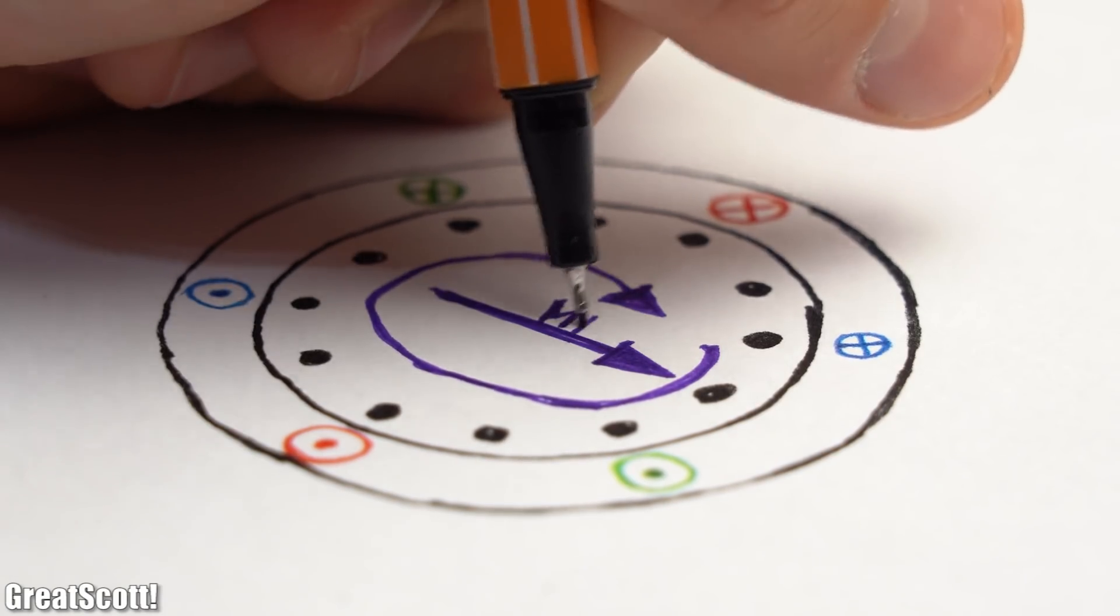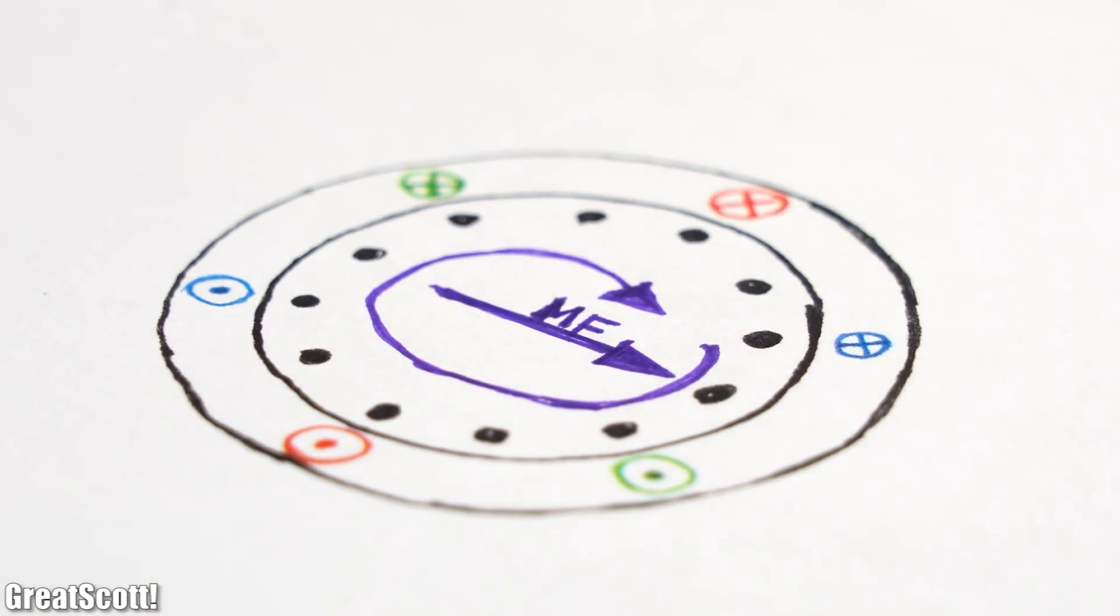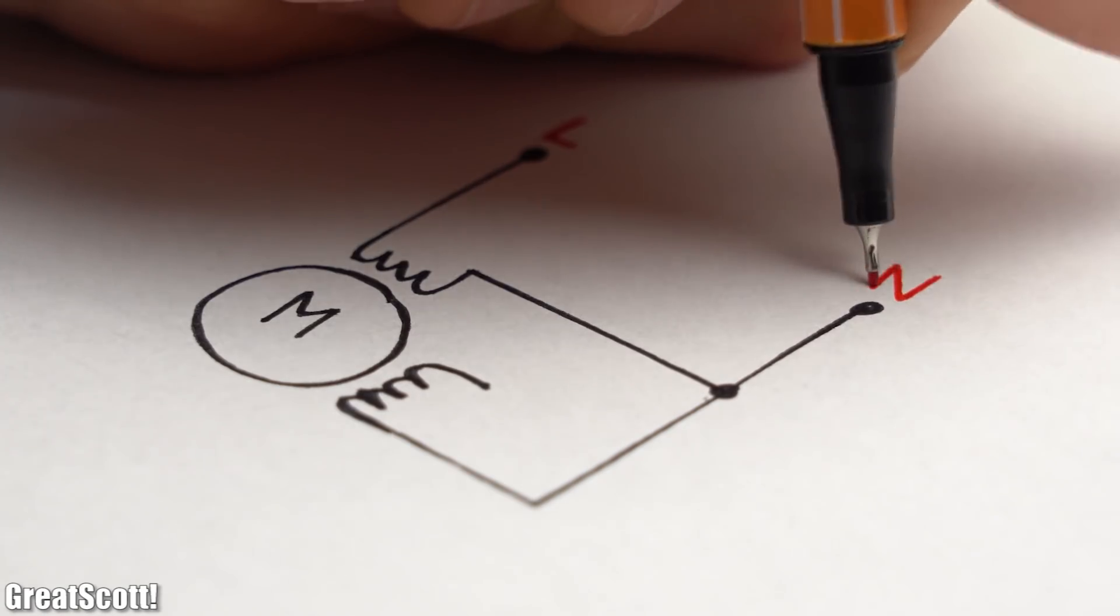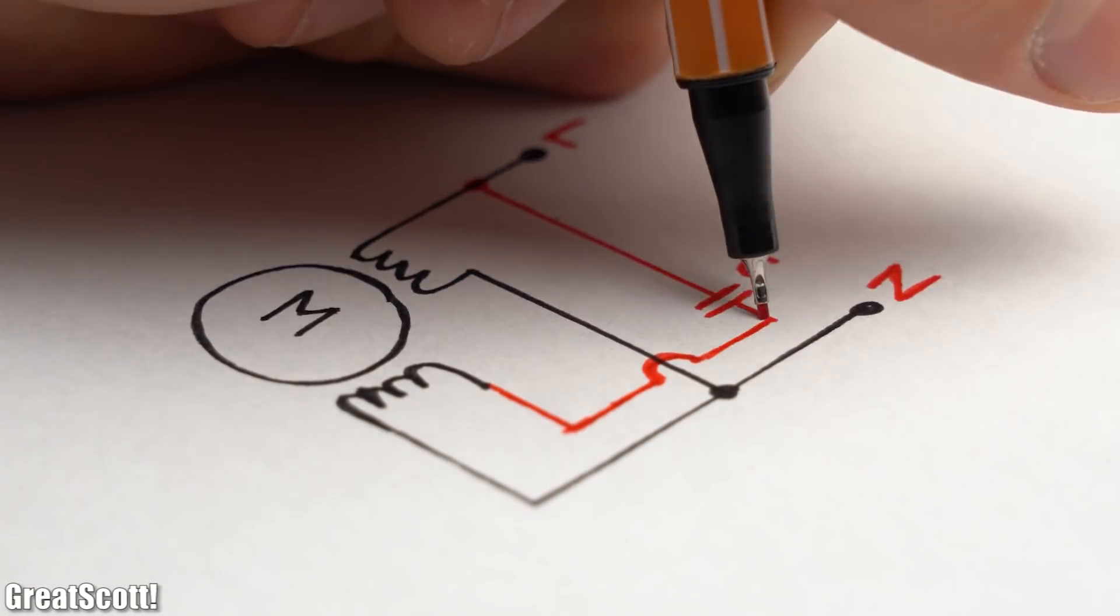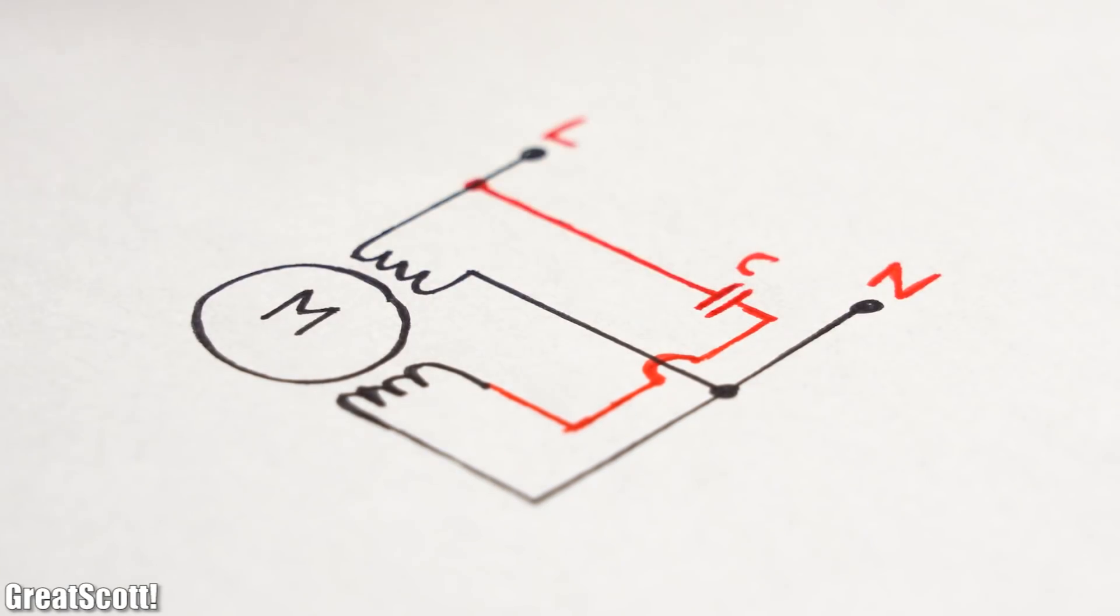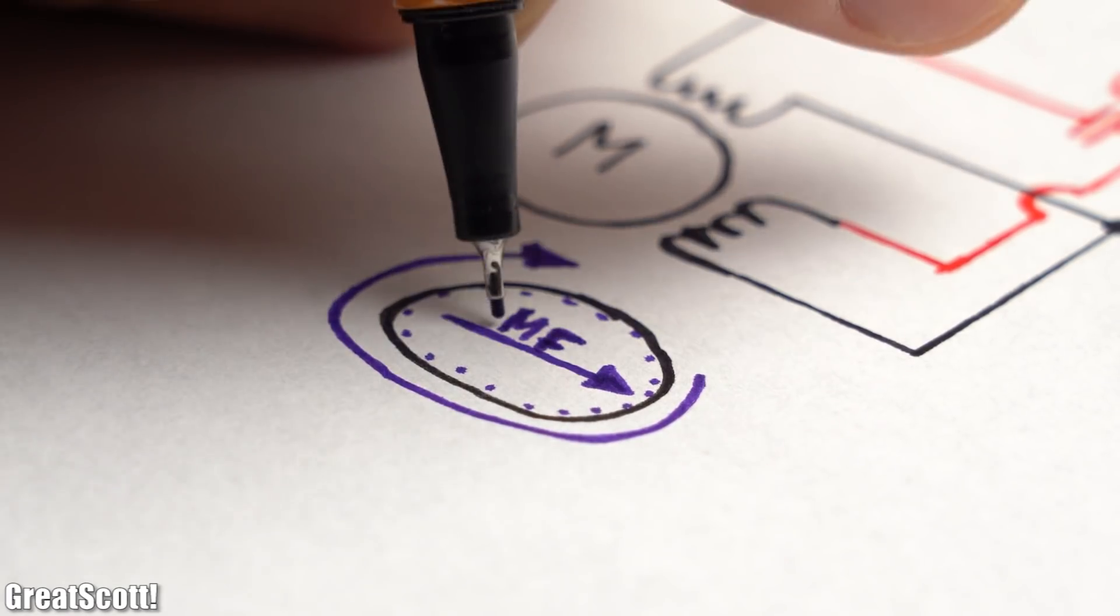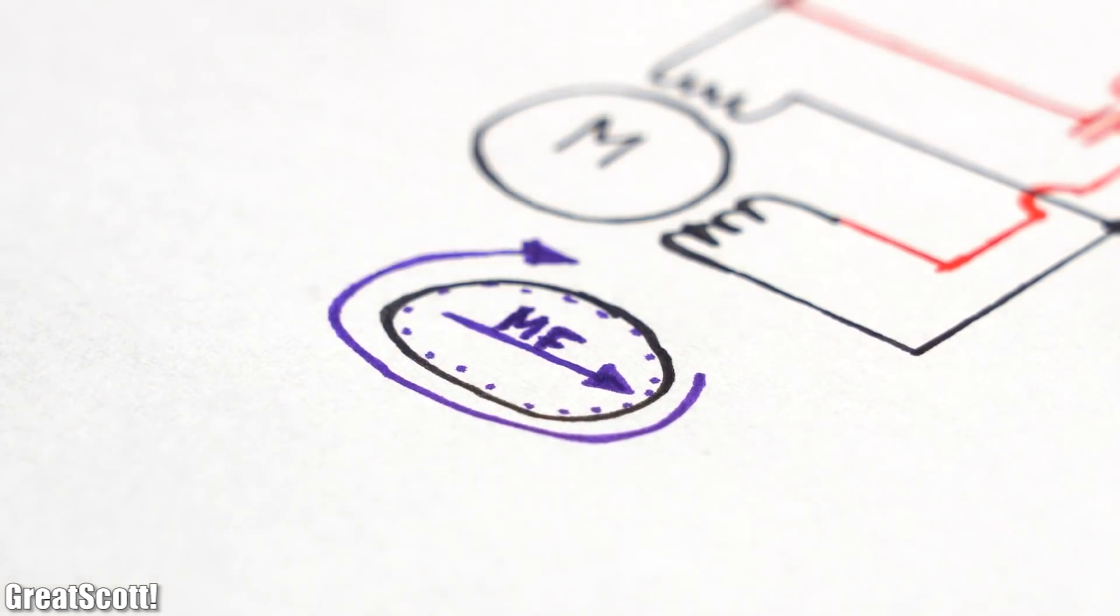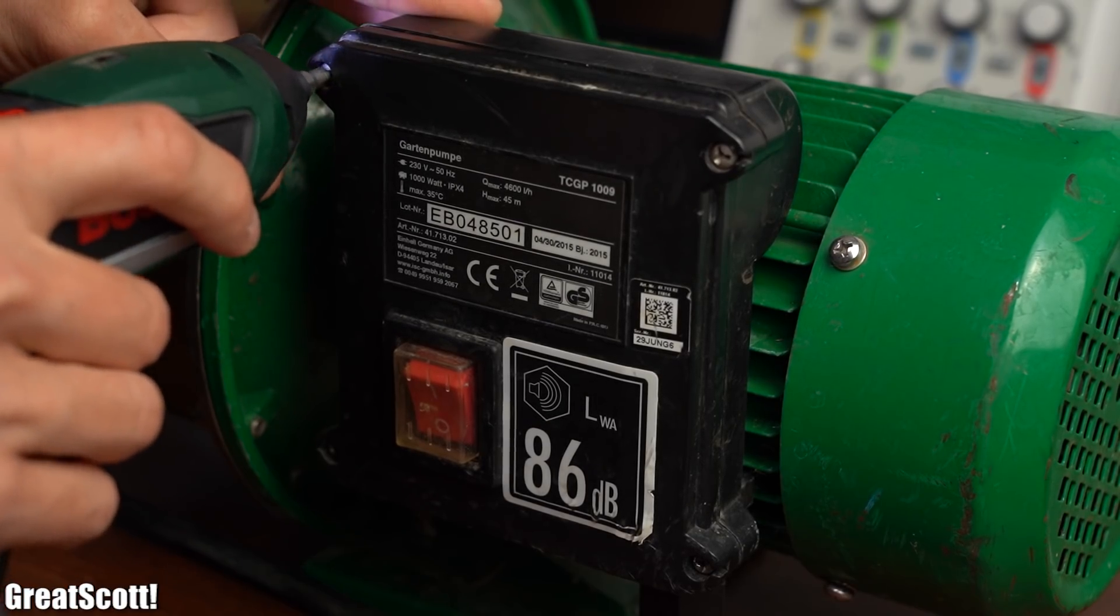The reason is that this motor still needs to create a rotating magnetic field which it does so by utilizing the L and N phase and additionally a capacitor which creates a third phase with a phase shift of 90 degrees. This way the rotating field is more like an ellipse than a circle but this method works just fine for smaller asynchronous motors.